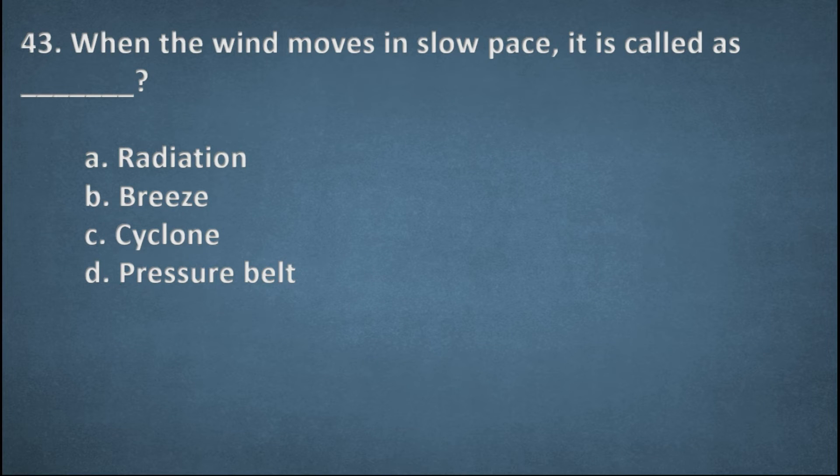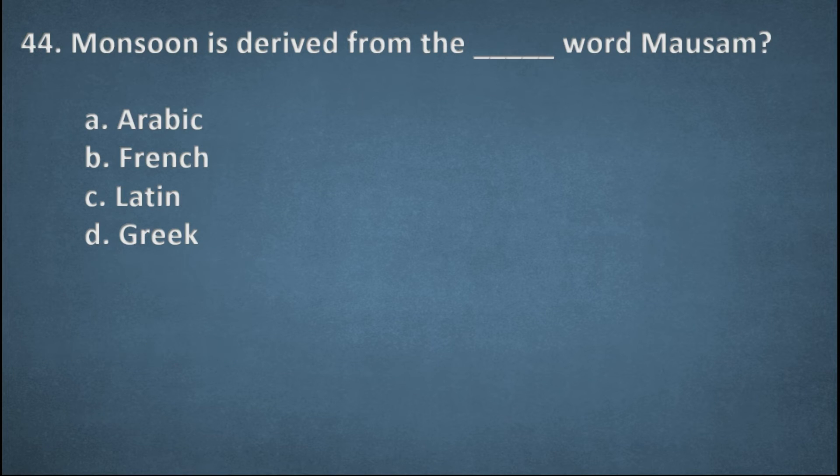Next one. When the wind moves in slow pace, it is called as. Options: Radiation, Breeze, Cyclone, Pressure built. Right option, B, Breeze. Next one. Monsoon is derived from the word Mawsim. Options: Arabic, French, Latin, Greek. The right option, A, Arabic.